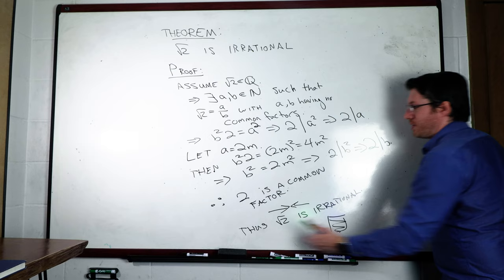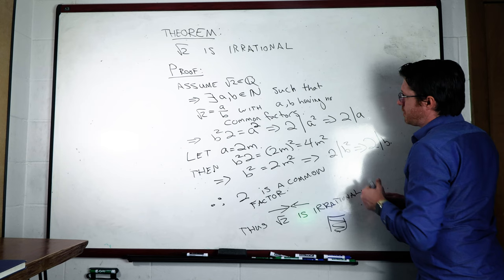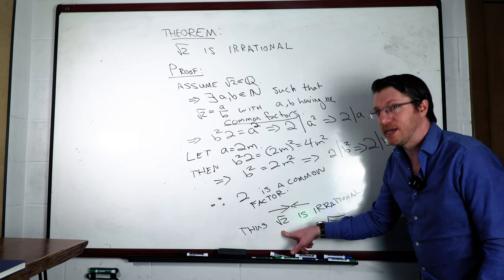Thus, 2 is a common factor of a and b. And that's a contradiction because we assumed that we made it this way. And so that tells us that square root of 2 is irrational. There you go. Pretty standard. So what's next?